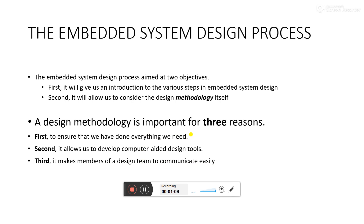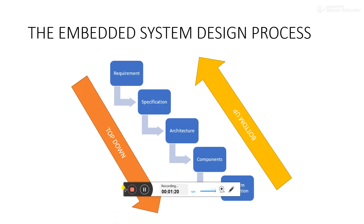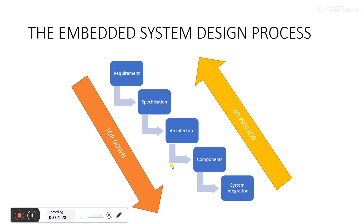We need this design methodology whenever we try to manufacture a complete embedded system. With any type of embedded system design, we need some requirements, then a specification of the system, then the architecture of the complete system, then the components, and finally system integration. A layman decides what type of requirement is needed.